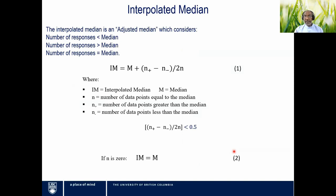The interpolated median is essentially the median adjusted to the 50th percentile. Think of it as an adjusted median. The adjustment depends on the number of responses less than the median (n minus), greater than the median (n plus), and equal to the median (n). For an odd number of responses, the interpolated median is calculated using: IM = median + (n_plus − n_minus) / (2n). For an even number of responses, the interpolated median equals the standard median.